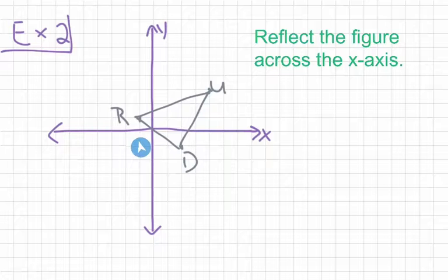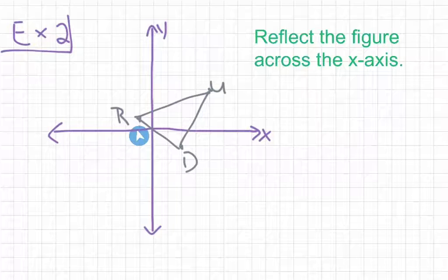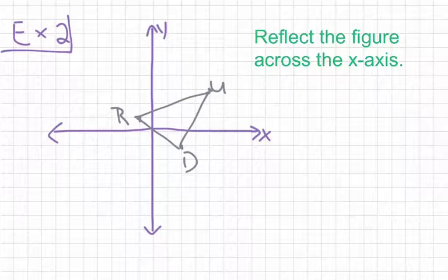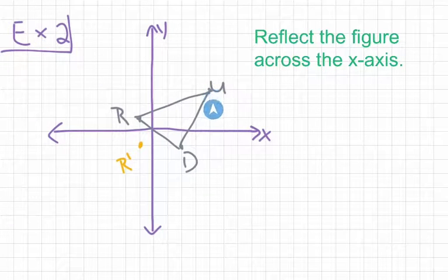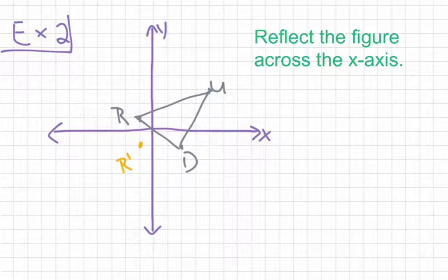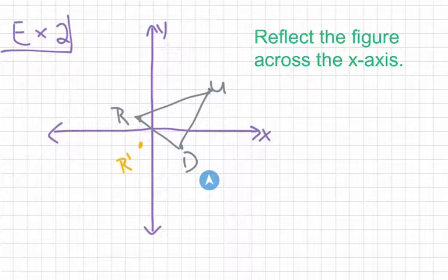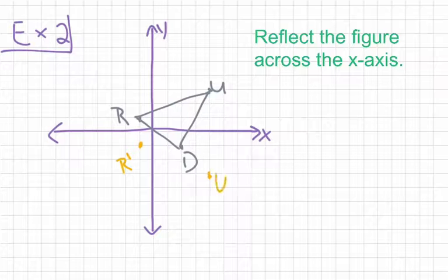Starting with point R, we count its distance from the x-axis — 1 unit above. So R' would be 1 unit below the x-axis. We put R' right there and label it R'. Moving on to point U, which is 3 units above the x-axis. So U' is going to be 3 units below the x-axis, going right there. We label it U'.